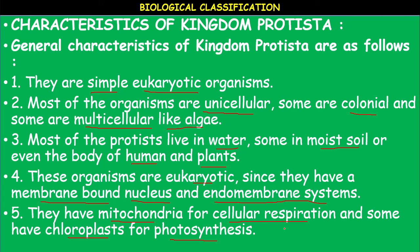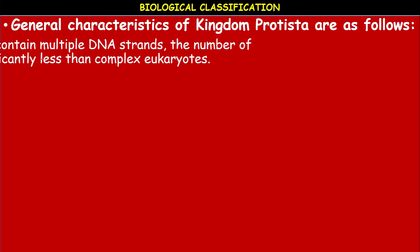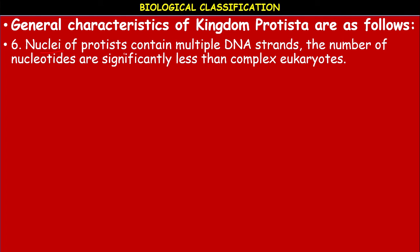All unicellular eukaryotic organisms are placed under Protista, but the boundaries of this kingdom are not well defined. It acts as a connecting link between Monera and the remaining kingdoms — Fungi, Plantae, and Animalia. They act like a bridge between Monera and the other three kingdoms. The nuclei of Protista contain multiple DNA strands, and the number of nucleotides is significantly less than in complex eukaryotes — they are simple eukaryotes.